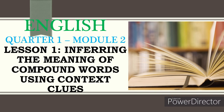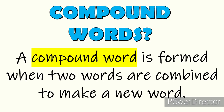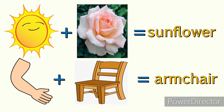First, let us get to know the meaning of a compound word. A compound word is formed when two words are combined to make a new word. Let us study the examples given. Sun plus flower — they become sunflower. The two words mean differently, but when combined, they make a new word with a different meaning.